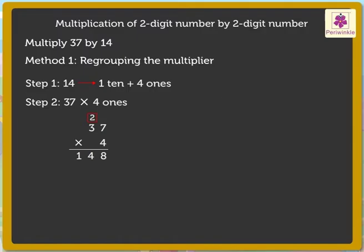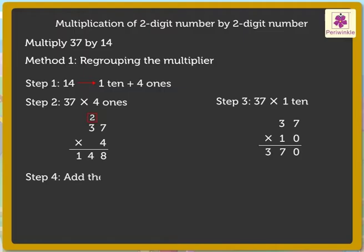Step 3: Now multiply 37 by 1 ten, that is 37 into 10, which is equal to 370. Step 4: Finally, add both the products, that is 148 and 370, to get the answer 518.